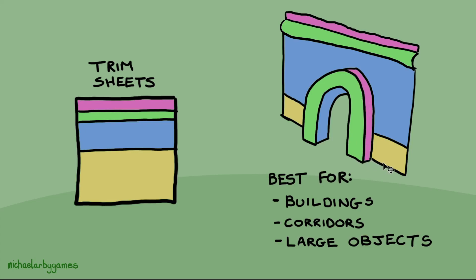This allows us to use one texture for a very large piece of an object — very useful for environmental details and corridors. It's also very efficient, and it can be used on multiple objects at once, which makes trim sheets very versatile.